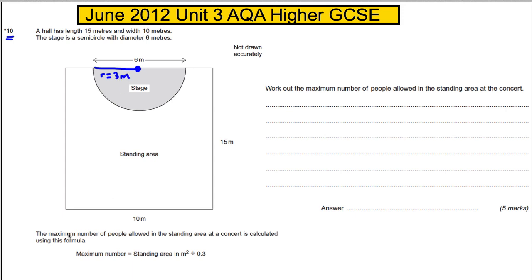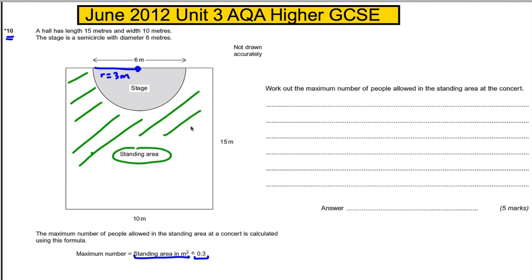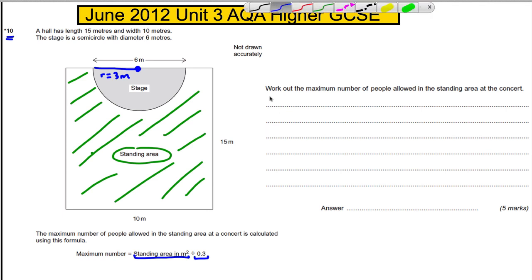The maximum number of people allowed in the standing area at the concert is calculated using this formula: maximum number equals the standing area in meters squared divided by 0.3. To start, we need to work out the standing area, which is everything in the rectangle excluding the stage. Lay out your work clearly and tell the examiner what you're doing.